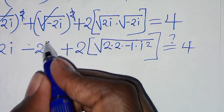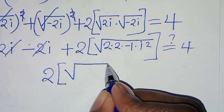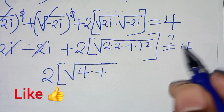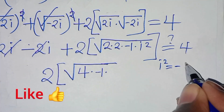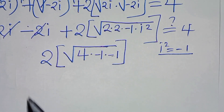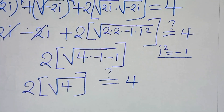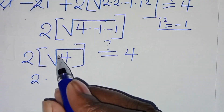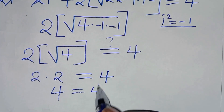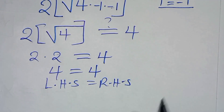So 2i squared is 4, and 2 minus 2 here gives 0. Then we have 2 into the parentheses: square root of 2 times 2 is square root of 4, then multiplying by minus 1, times i squared. Remember i squared is equal to minus 1. So minus 1 times minus 1 is positive. This implies here we have 2 times square root of 4, which should give us a value of 4. So 2 times 2 is 4, which is equal to 4. So the left hand side is equal to the right hand side.